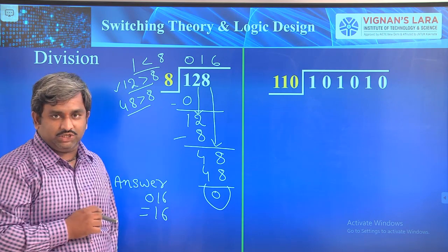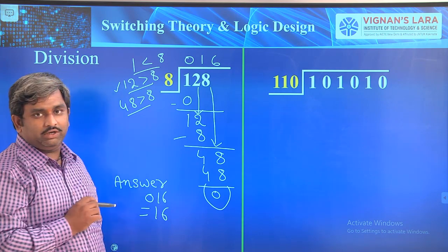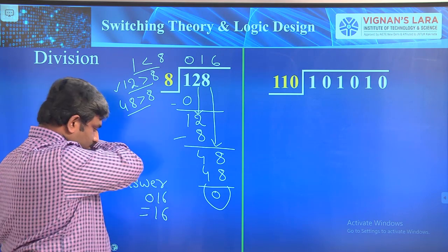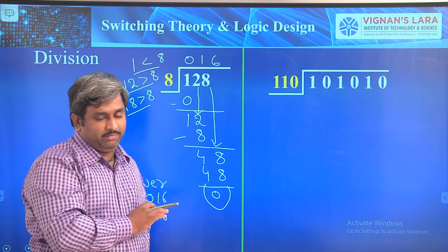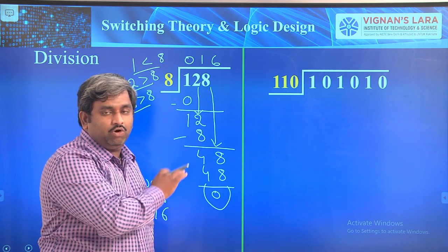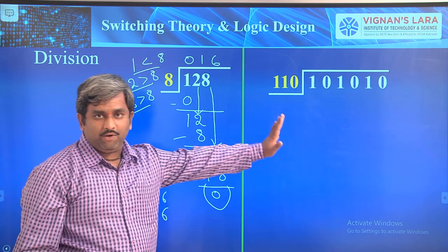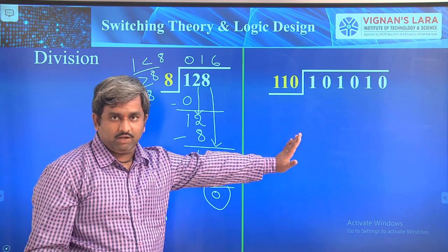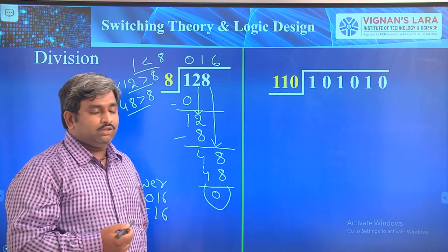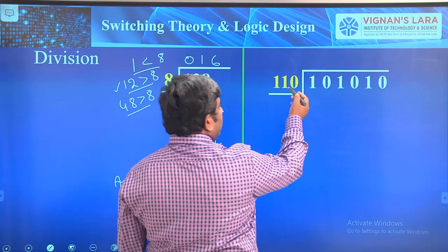So 128 divided by 8 equals 16. This is the solution in the decimal number system. Now we will see the same concept in the binary number system — the same procedure applies.